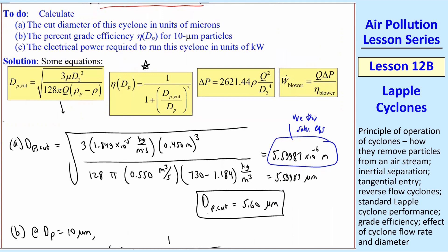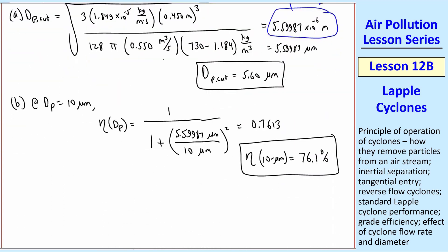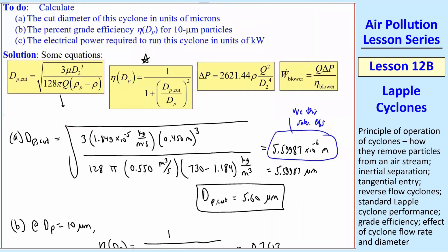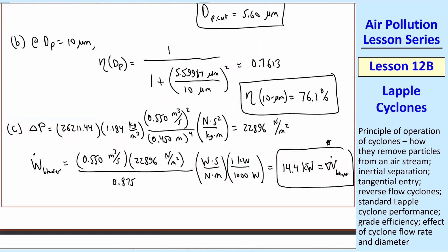And then finally, C says the electrical power required to run this cyclone in kilowatts. So I plugged in all the other numbers and their units, and I get 22,896 newton per meter squared. That's the pressure difference. And then finally, W_dot of the blower. This is power required to run this thing. So I use this equation for delta P. Now I have to plug that delta P into here. That gives me 14.4 kilowatts. An average hair dryer is about 1,000 watts or 1 kilowatt. So this is like running 14 hair dryers.